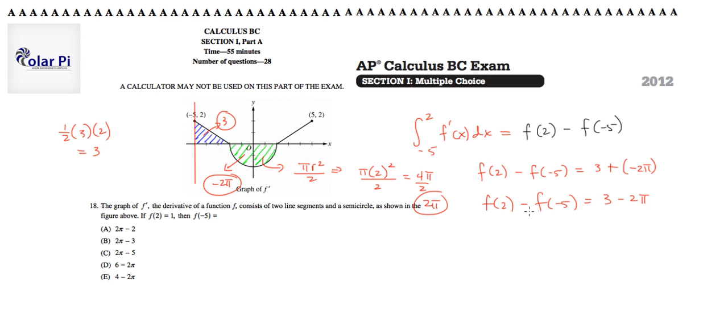Now, since I want to solve for f of negative 5, I'm bothered that there's a negative in front of it, so what I'm going to do is I'm going to multiply both sides of this equal sign by negative 1. Doing that, I'm going to get f of negative 5 minus f of 2 is equal to 2 pi minus 3.